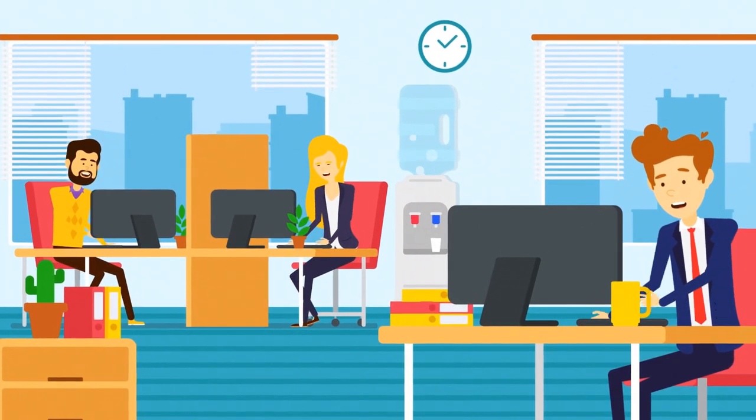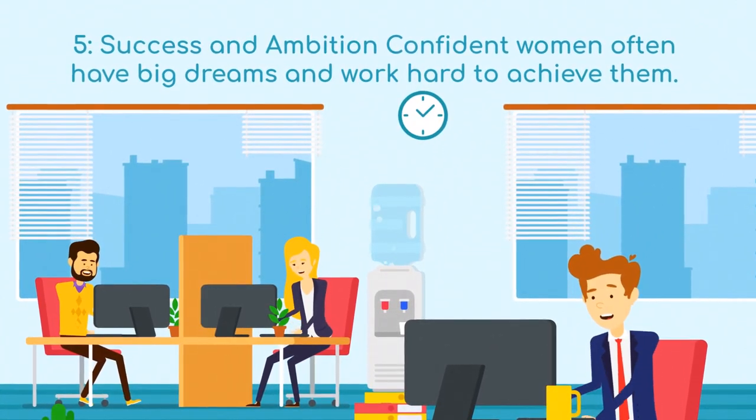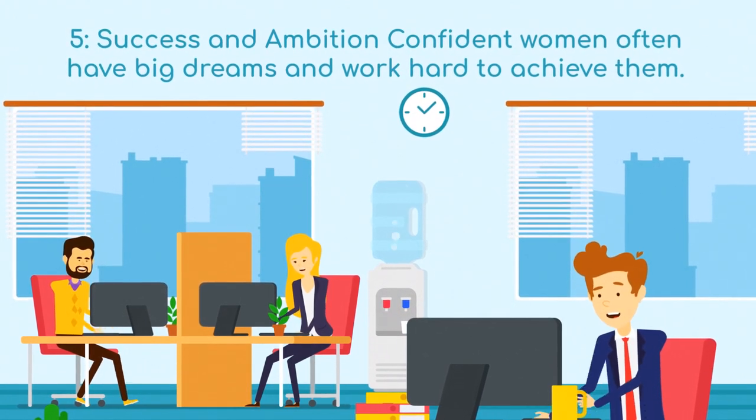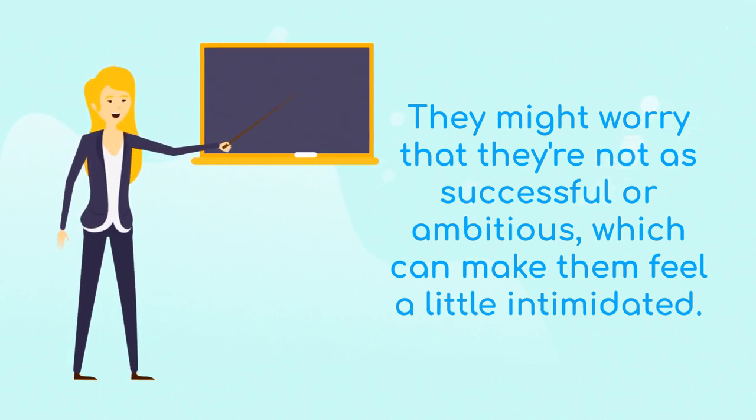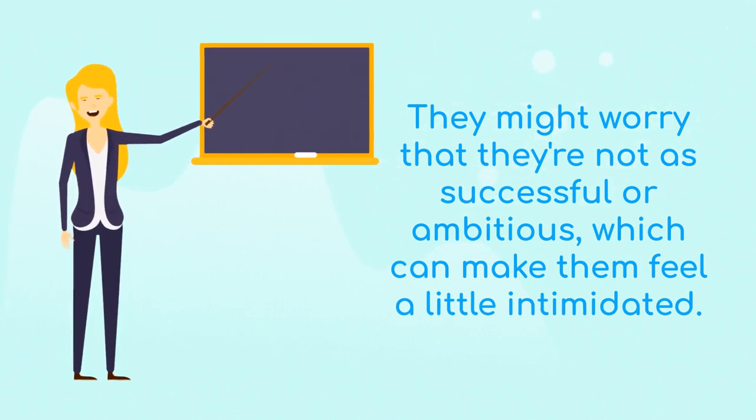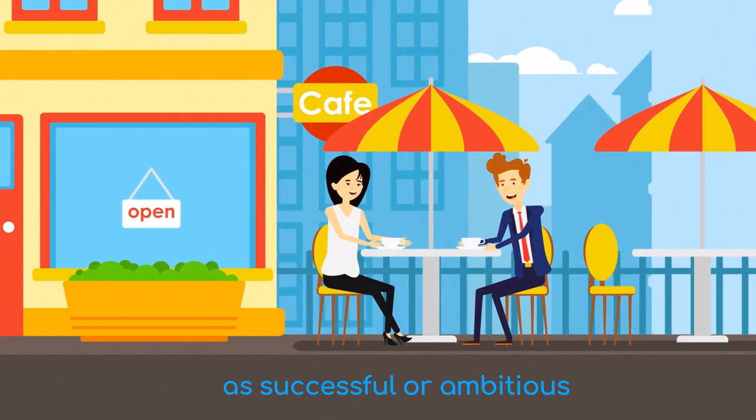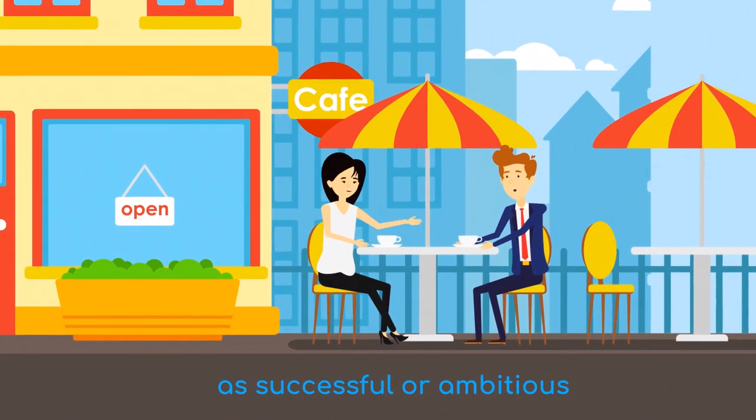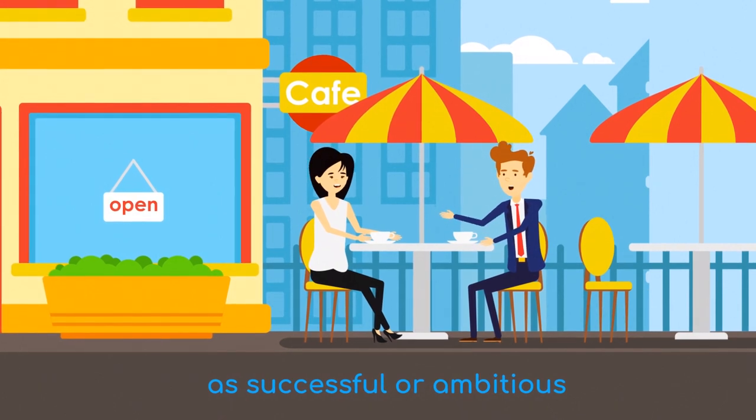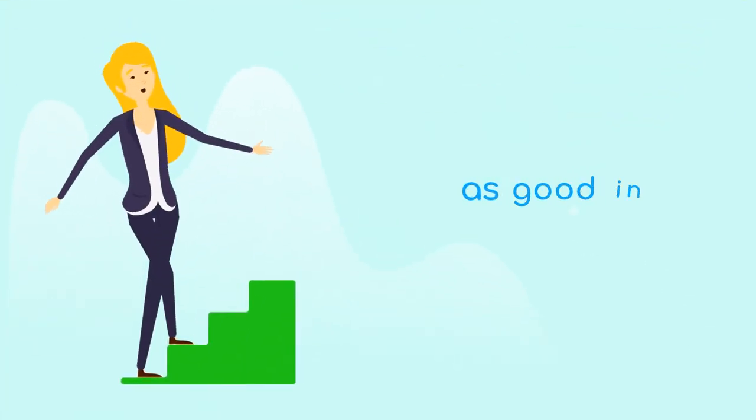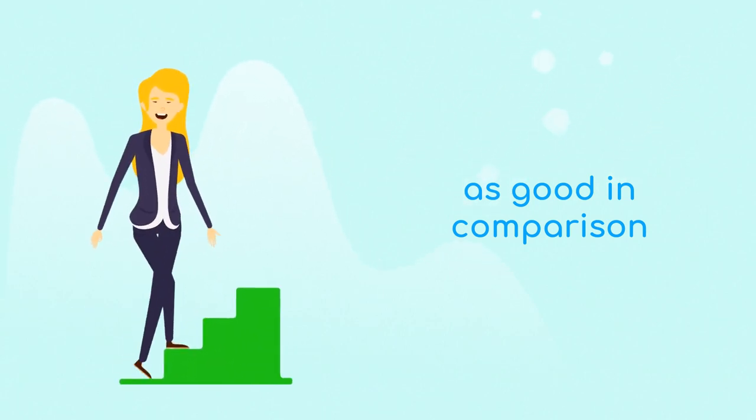Fifth, success and ambition. Confident women often have big dreams and work hard to achieve them. They might have amazing jobs or do really cool things. While this is great, sometimes men feel a bit unsure around them. They might worry that they are not as successful or ambitious, which can make them feel a little intimidated. It's like when you meet someone who's really good at something - you might worry you're not as good in comparison.